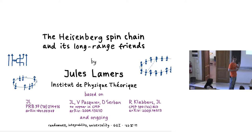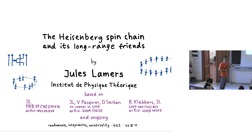I want to argue that the Heisenberg spin chain naturally sits in the long-range world, and it's kind of a special nearest-neighbor point. It's quite interesting to view it in the context of long-range spin chains. This is based on work with Rob Klabbers, who is in Berlin, and with Vance and Pasquier and Steven, who are both here.